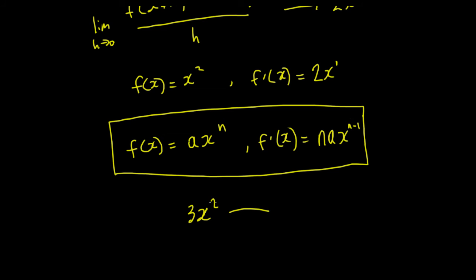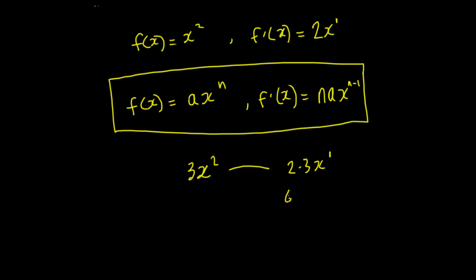So in this case here, we would multiply by the exponent. So it would be 2 times 3 times x and then take one away from the exponent. Well, 2 minus 1 is equal to 1. So the final answer for that would be 6x. So when we differentiate 3x squared, we get 6x.